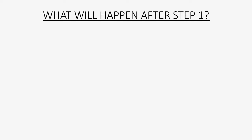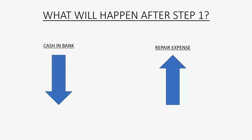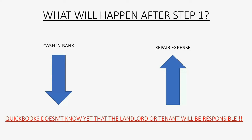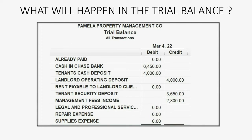So what will happen after the first step when we record paying this property expense? Repair expense goes up and cash goes down. QuickBooks doesn't know yet that the landlord or the tenant will be responsible — it thinks we will be responsible, which is why it records our company's repair expense. Cash in bank will go down because we physically paid the money. In the trial balance after step one, repair expense will show up for $700 and the bank account balance goes down to $5,750.